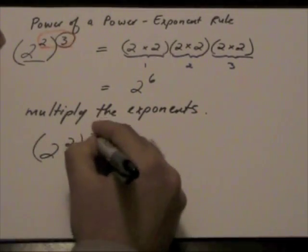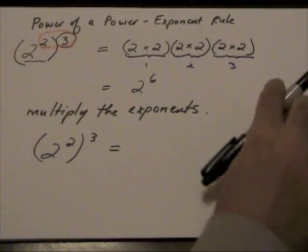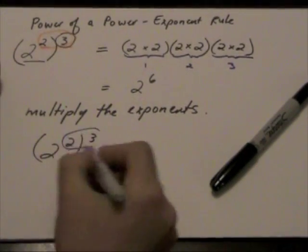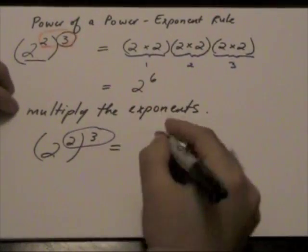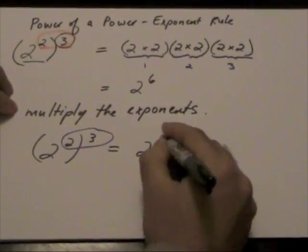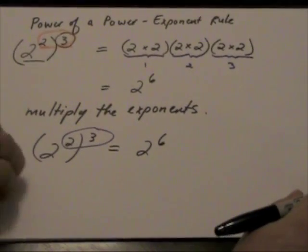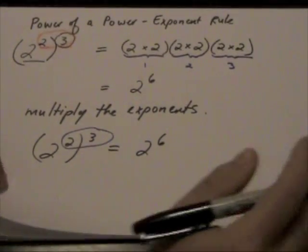So, 2 to the power of 2 to the power of 3, all we have to do here is multiply these two exponents. So that 2 times 3 will give me 6, so 2 to the power of 6. Let's look at one more.